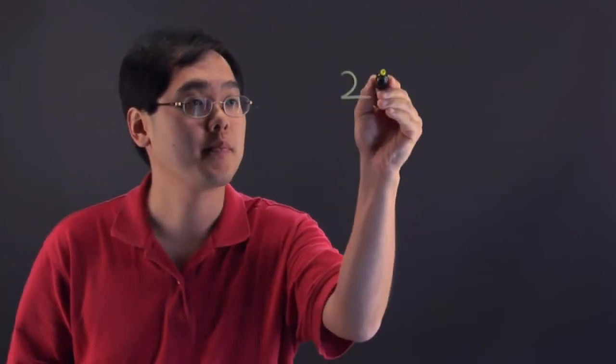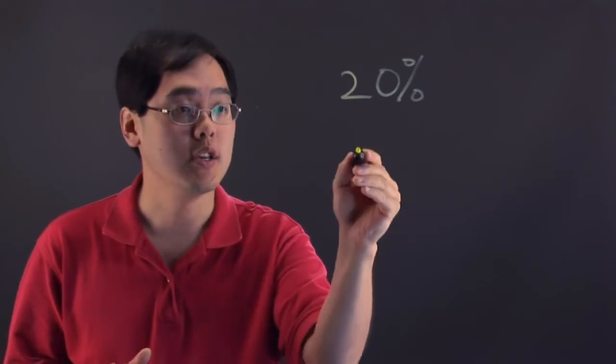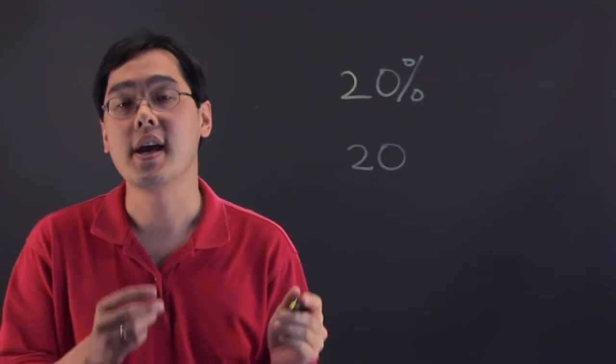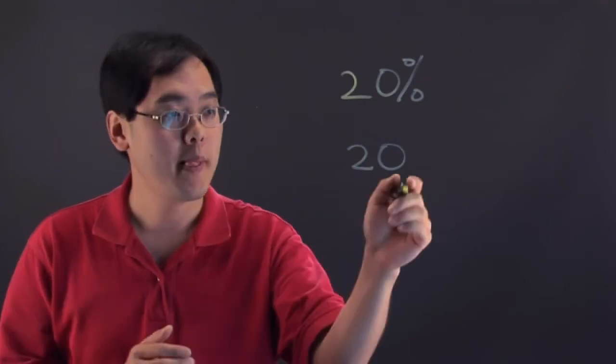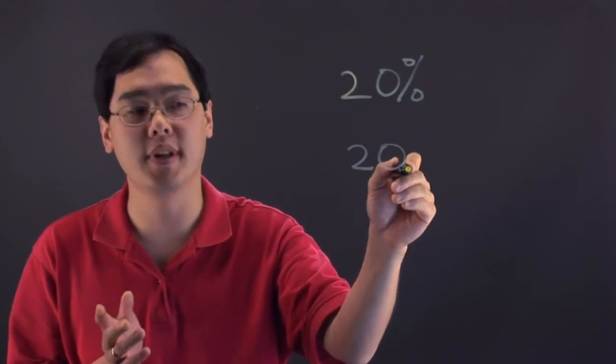So with 20%, the first thing you do with any percentage is you take the number as is and what you want to think about is every percentage, once you figure out the location of the decimal point, you always move to the left two places.